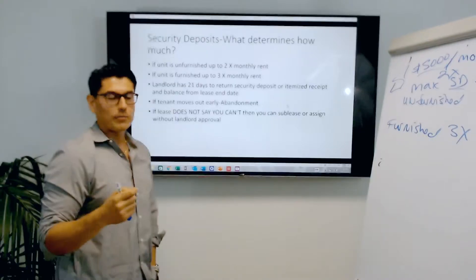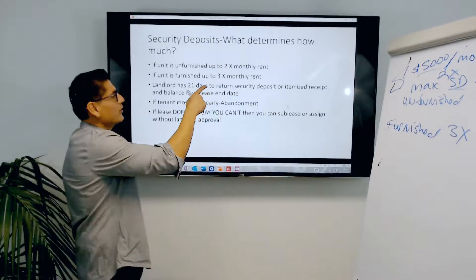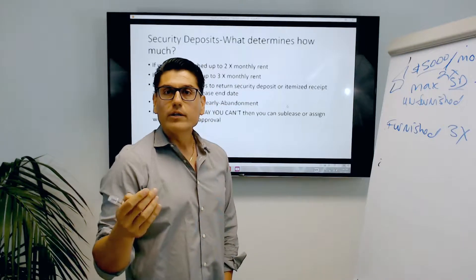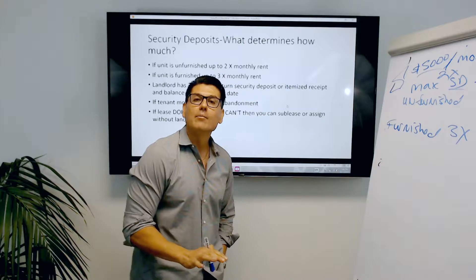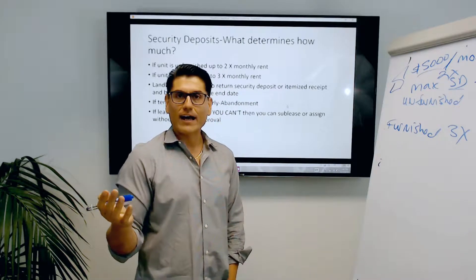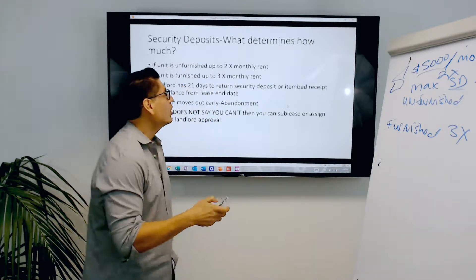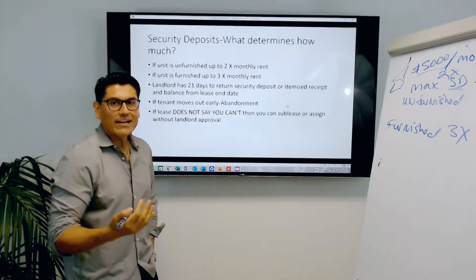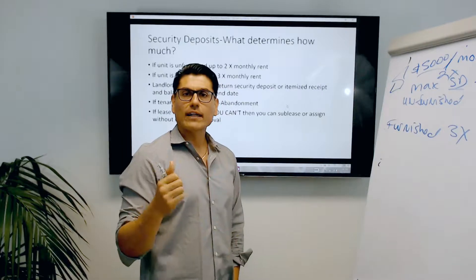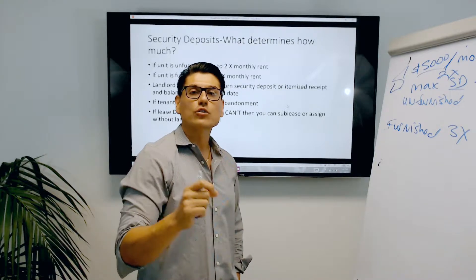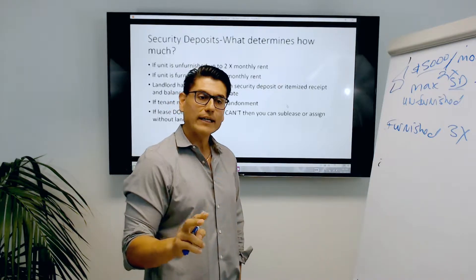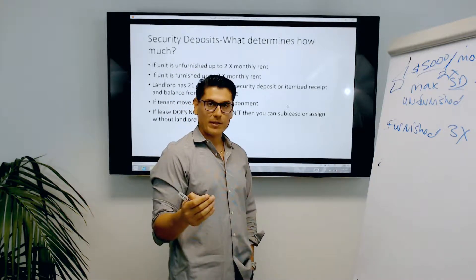These are maximums, not minimums. So you can charge less — like those apartments that say move-in special $300 and the rent's $1,000 a month. These statutes set maximums on security deposits. Unfurnished: up to two times the monthly rent. Furnished: up to three times the monthly rent. Make sure you keep that straight.